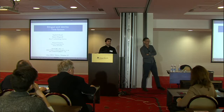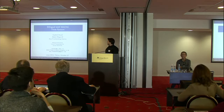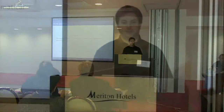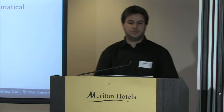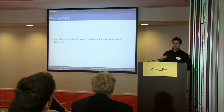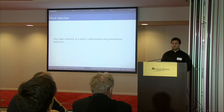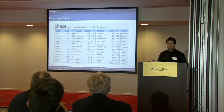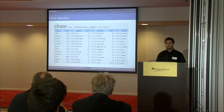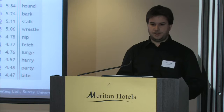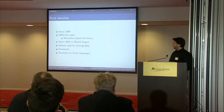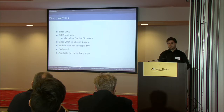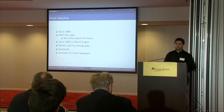Thank you, Michael, for the introduction. I'm really sure that many of you have heard about word sketches. They are a one-page summary of a word's collocational and grammatical behavior, meaning that a list of collocates is offered to the user and divided according to some syntactic or semantic features. It looks like this, which means that 'tail' is the most salient object of 'chasing', for example. The idea exists since 1999, and in 2002 they were first used in the Macmillan English Dictionary project, and since 2004 we have them available in the Sketch Engine.